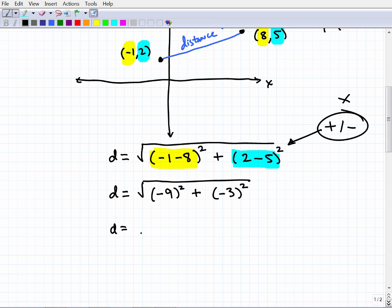The distance is going to be equal to the square root of negative 9 squared, which is negative 9 times negative 9, which is 81, plus what's negative 3 squared? It's negative 3 times negative 3, so that's going to be a positive 9. So the distance is going to be the square root of 81 plus 9 or 90. Let me get my little handy calculator out here, and you can follow along with me. When we take the square root of 90.